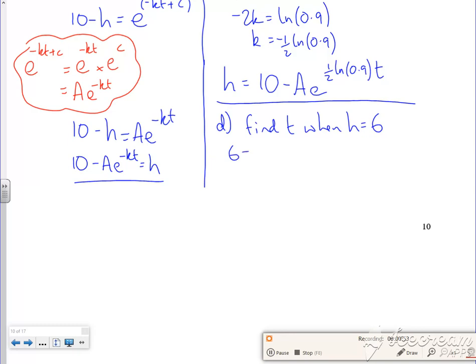So I've got 6 is 10 minus 10, oh that's a 10 now isn't it? Look at me rushing. 10E to the half ln 0.9 times T. Do the switch around so 10E to the half ln 0.9 T is 4, so E to the half ln 0.9 T is 0.4.